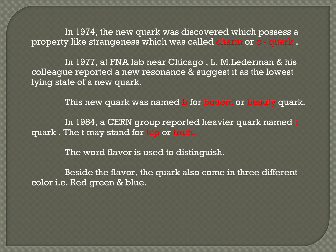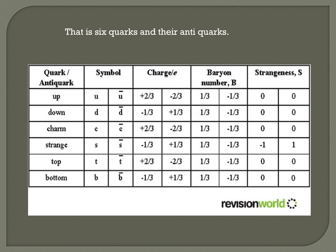Now we look at the table of six quarks and their anti-quarks. The six quarks are: up quark (u), down quark (d), charm quark (c), strange quark (s), top quark (t), and bottom quark (b). Similarly, the anti-quarks are: ū, d̄, c̄, s̄, t̄, and b̄ — that is anti-up, anti-down, anti-charm, anti-strange, anti-top, and anti-bottom quarks.